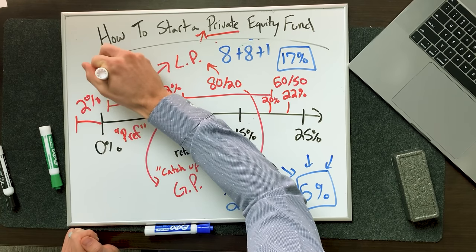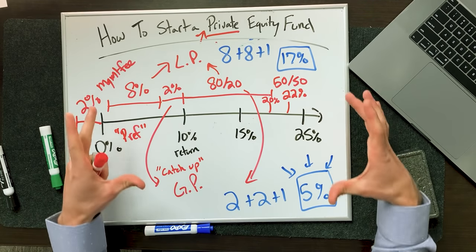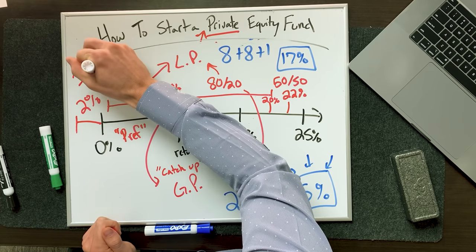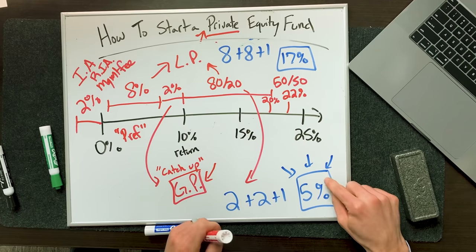What about management fees? A lot of funds will also charge usually about a 2% management fee and take that right off the top before the waterfall sequence. The management fee typically goes to your investment advisor or registered investment advisor — that entity takes the management fee just for giving financial advice. The other stuff, which is called carried interest — that's a keyword — carried interest typically goes to the general partner. You as the fund manager participate in both. With the management fee, that takes this to probably about six and a half percent after you adjust for everything.